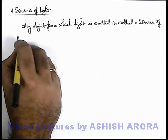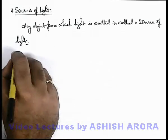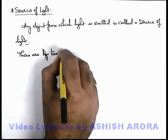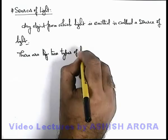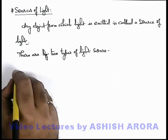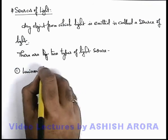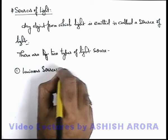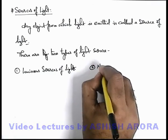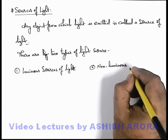There are different kinds of sources of light, and in broad terms we can say there are 2 types of light sources. There are 2 categories in which all kinds of light sources are categorized: the first one is luminous sources of light, and the second one is non-luminous sources of light.